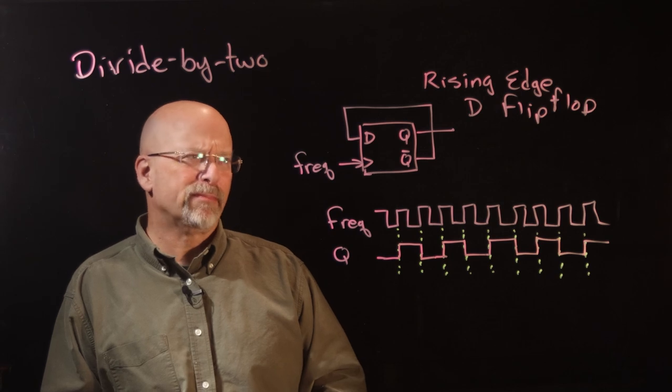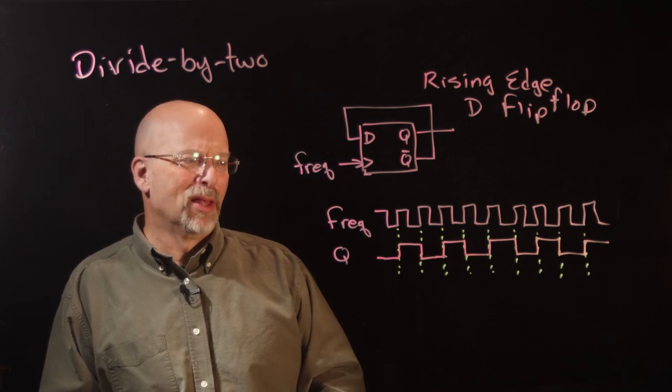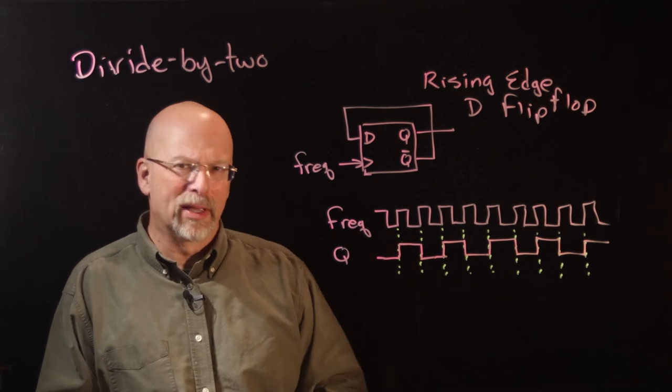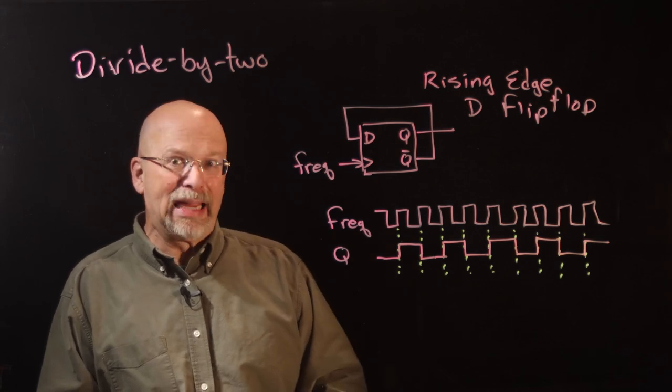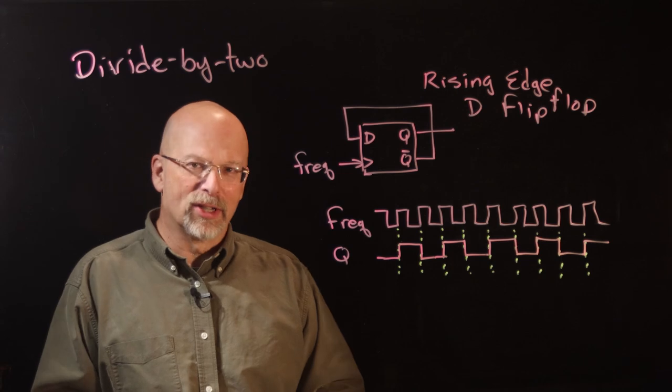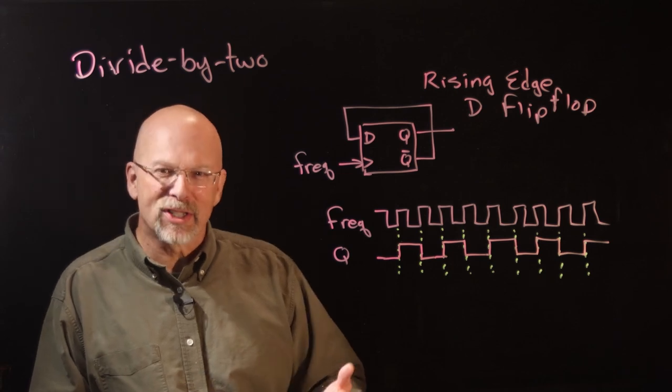Now, that seems like, well, okay, if this is 3.6 gigahertz, then that's just simply 1.8 gigahertz. So it's a little slower, but what if we want something even slower?